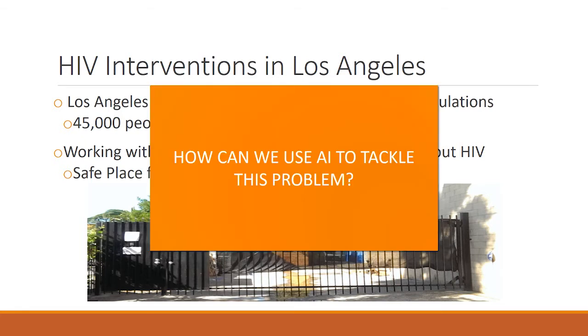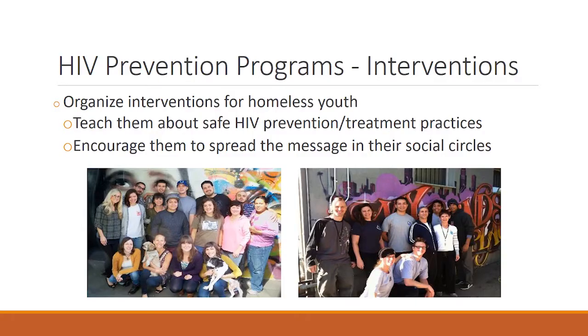The question we want to answer is how can we use AI to tackle this problem and spread awareness about HIV? Traditionally, these homeless shelters organize intervention programs for youth, where they select a small set of homeless youth and train them as peer leaders. These peer leaders are taught how the HIV virus spreads, what you can do to prevent infection, what to do if you think you have the virus, and so on. More importantly, these peer leaders are then encouraged to spread these messages amongst their peers in their social circles.